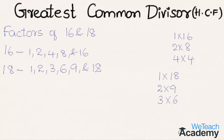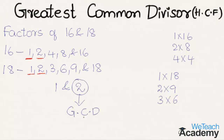Now let us discuss the common factors of both 16 and 18. The first factor is 1 and it is common, and coming to the next factor which is 2, it is also common. So the common factors of 16 and 18 are 1 and 2, and the greatest among both is 2. So 2 is the greatest common divisor, also called as highest common factor.